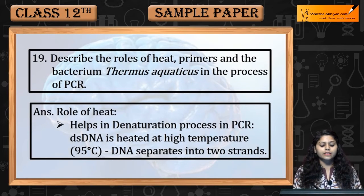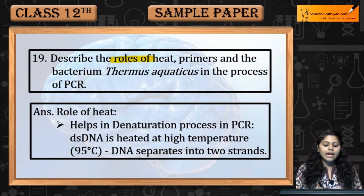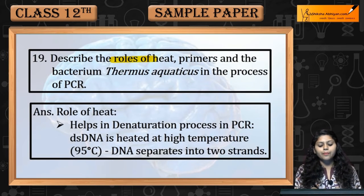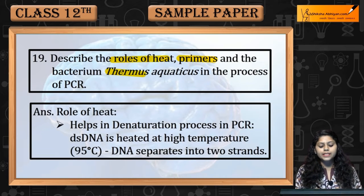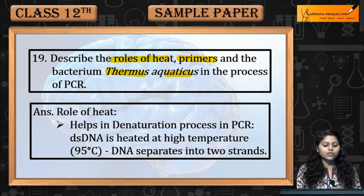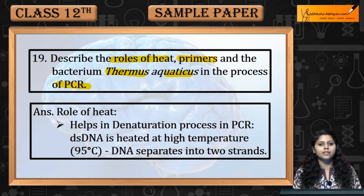Question number 19: Describe the roles of heat, primers, and bacterium Thermus aquaticus in the process of PCR.